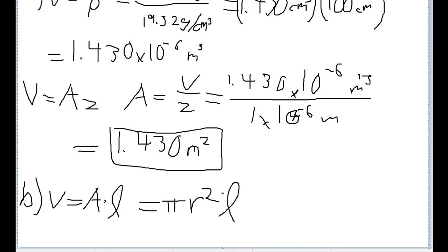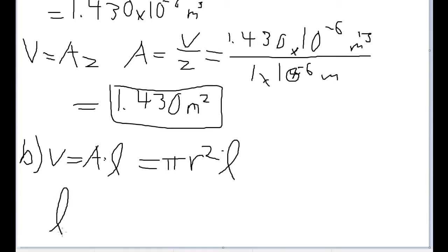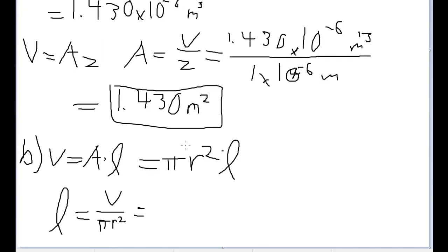Or rather, since we know we're solving for the length here, that's going to be equal to, the length is equal to the volume divided by pi r squared. Let me fix that pi up here. So now, up above, we already determined what the volume is here. So we already know to sub in for V. It's not going to be our answer here. This was the area of the side of it. The volume we determined for it was this value right here, the 1.430 times 10 to the negative 6. So our volume is 1.430 times 10 to the negative 6 meters cubed.